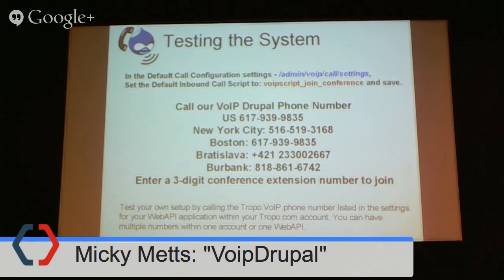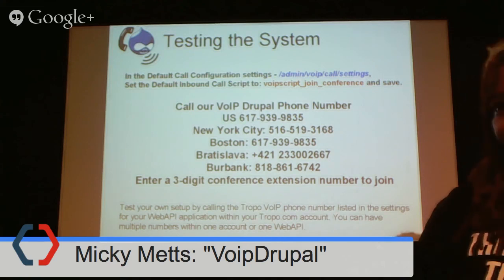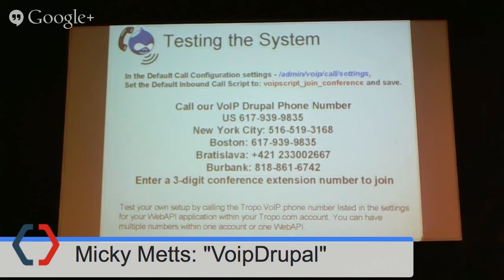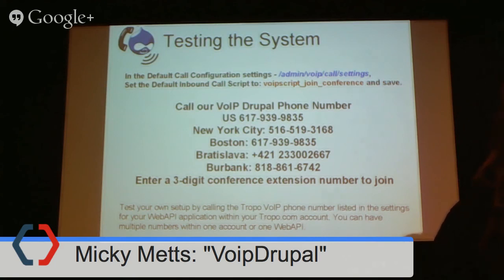We demonstrated this when we opened — we threw out the three-digit number one, two, three and were able to call and join a conference instantly. Is there a point to having a New York City versus a Boston number besides people paying more for long-distance? That's really it — so if you're a small one-person shop in Tokyo, you could have a presence in New York City by phone without people having to make a long-distance call. I called the New York City one just to be different and see if it worked too — and it did.